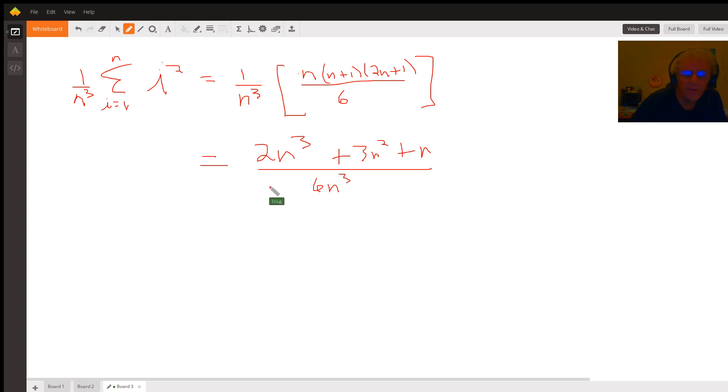Now you might recognize how to do that right away. If you don't, the key is to divide every term in the numerator and denominator by n cubed, the highest degree, so that you can get something that looks like this: three over n plus one over n squared all over six.